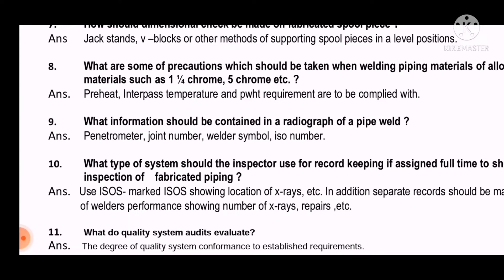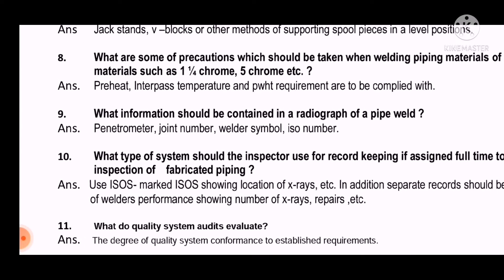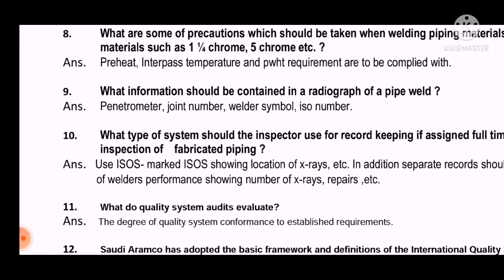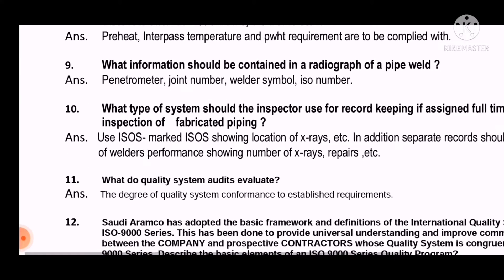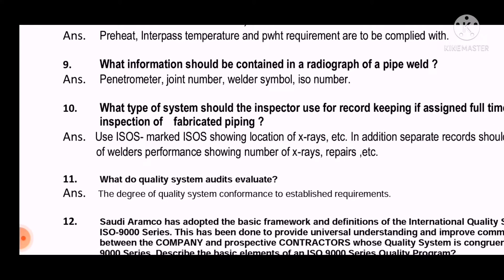Question 9: What information should be contained in a radiograph of a pipe weld? This is a common question every welding QC should know. The answer is: penetrometer, joint number, weld symbol, and isometric number — these are the details that must be present on a radiograph.